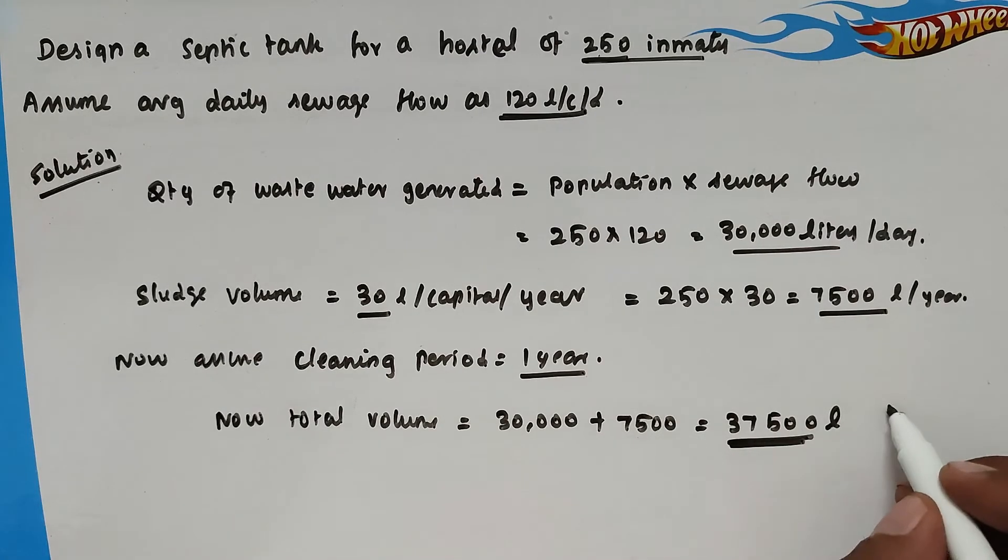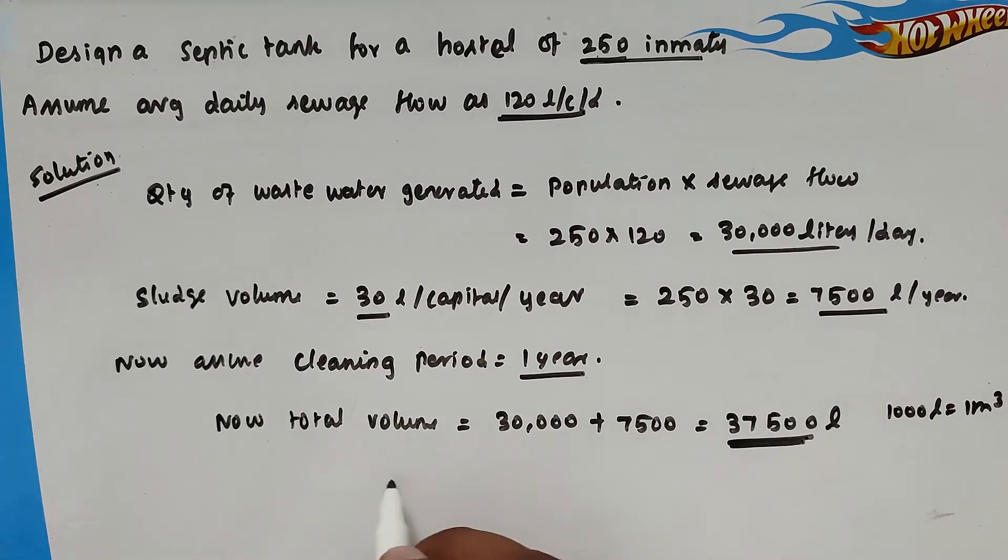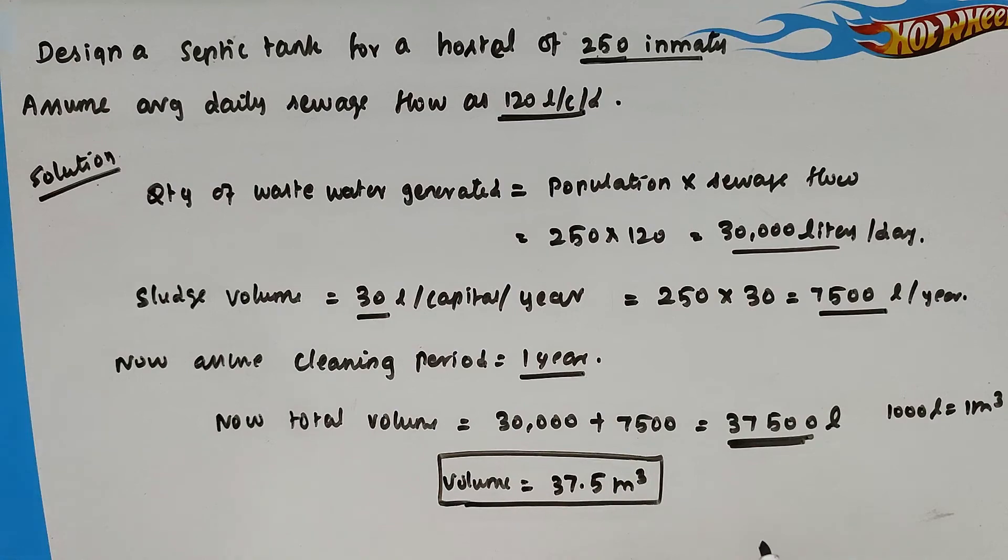1,000 liters equals 1 meter cube. So the total volume of septic tank will be 37.5 m³. So this is the total volume of septic tank.